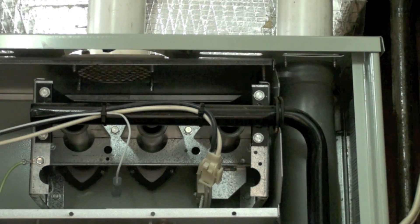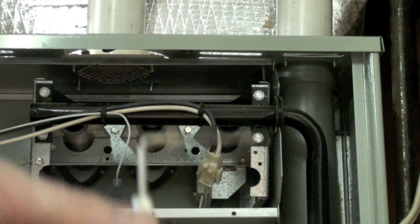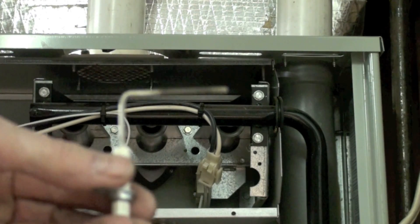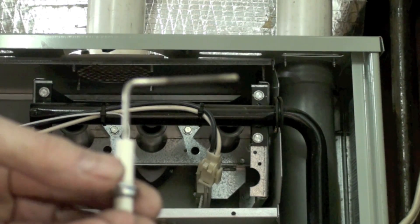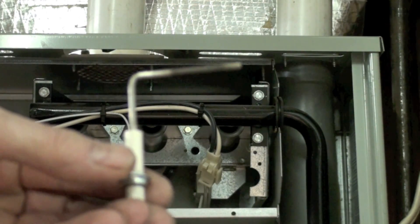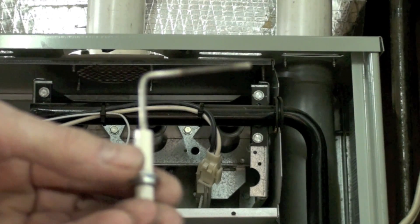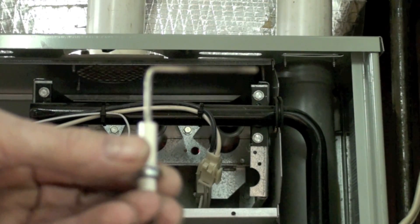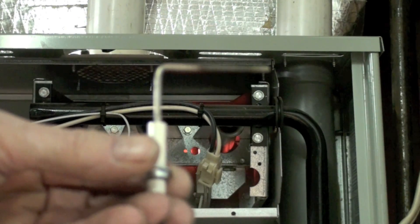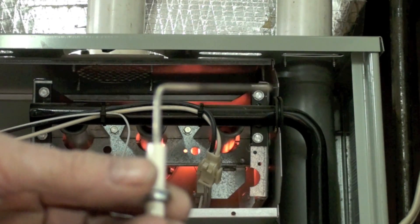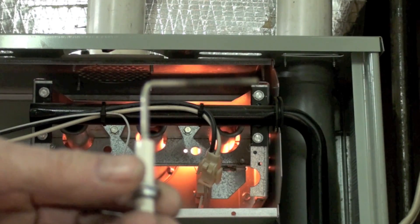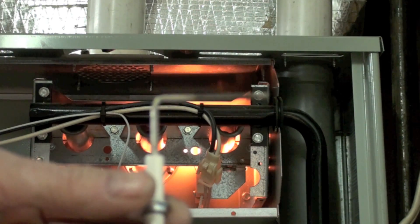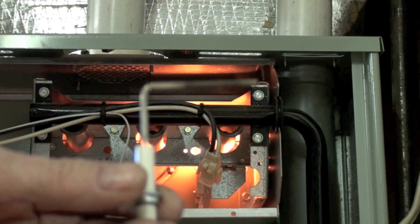Okay, now this is a flame rod. It's not much to look at, but it's just a piece of stainless steel, nothing special. It does get deposits on it. Now this one's been in this furnace for 12 years and I have never cleaned it and it hasn't failed.